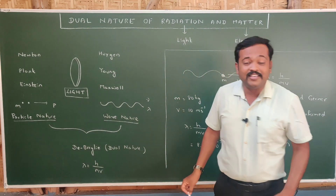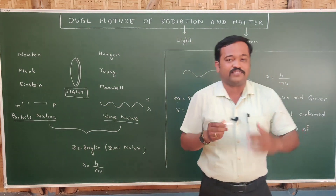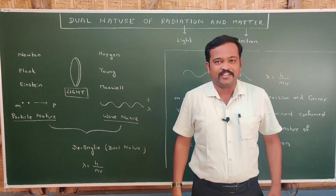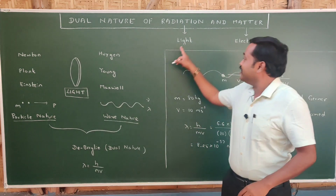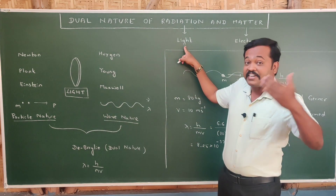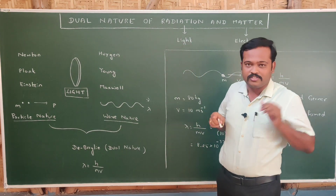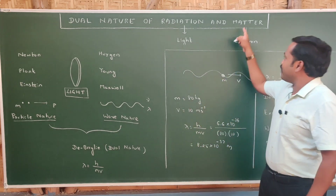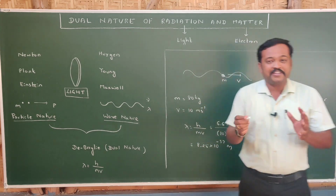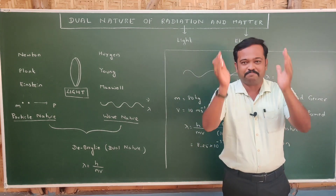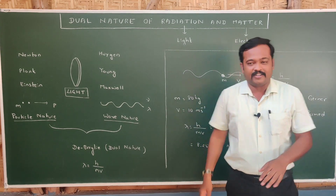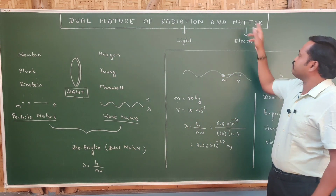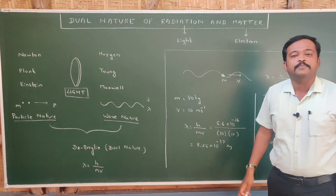Radiation is an energy which comes out from a source, usually in the form of rays. Let us consider light as a representative of radiation in this chapter. When we consider matter, matter is something which has mass and occupies space. Let us consider electron as a representative of matter.